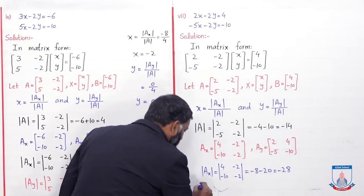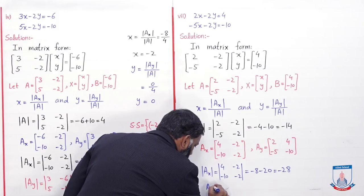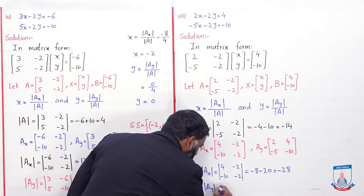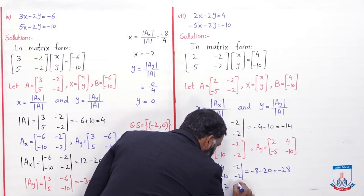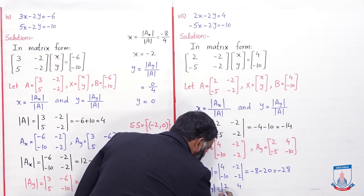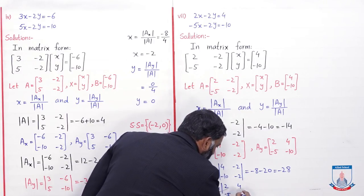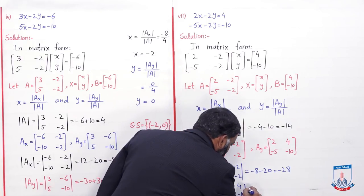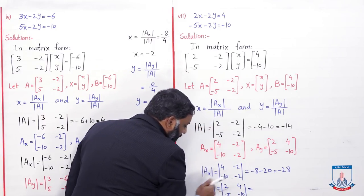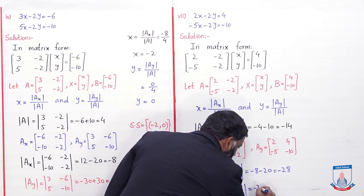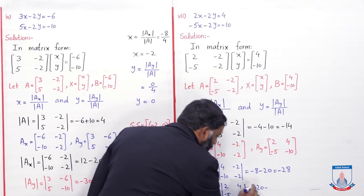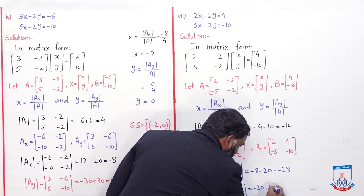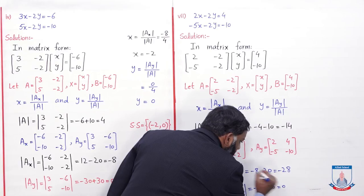Det(Ay) matrix [2, 4; -5, -10]: diagonal entries ko multiply karein — 2 × (minus 10) = minus 20. Minus non-diagonal entries: 4 × (minus 5) = minus 20, toh minus already yahan pe hai toh plus 20 ho jaayega. Toh minus 20 plus 20 = 0. Det(Ay) = 0.